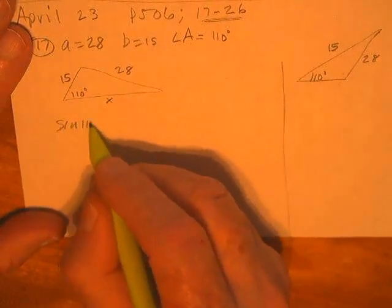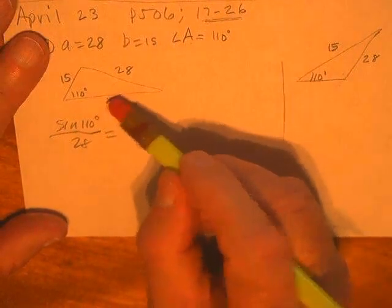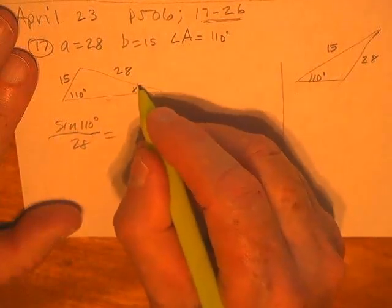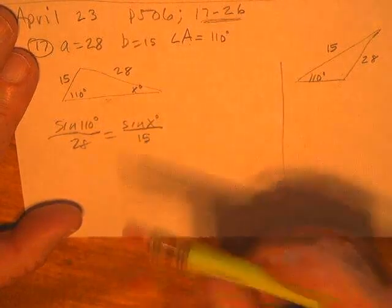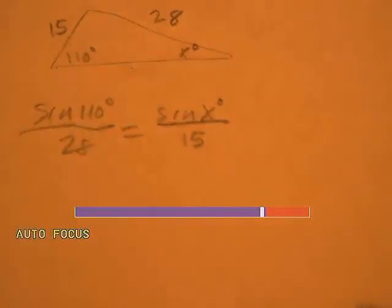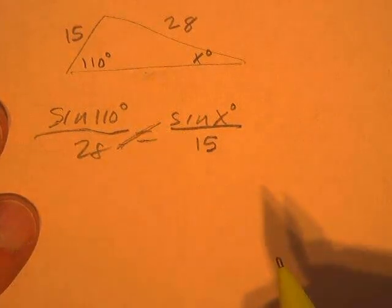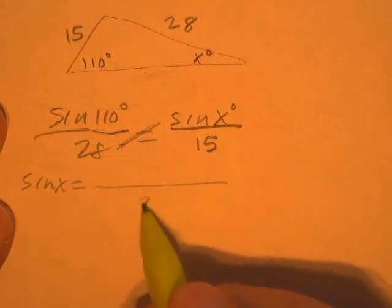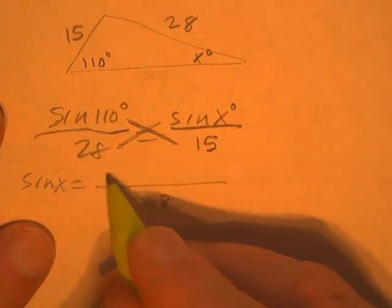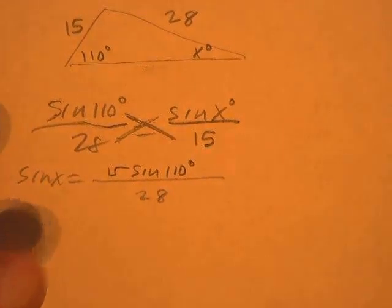Okay, so let's find angle X over here. So I'm going to blow this up a little bit. Okay, so think about this. Because this is going to be 28 sine X, which means we will wind up dividing by the 28 in a minute. 15 sine of 110 divided by 28.